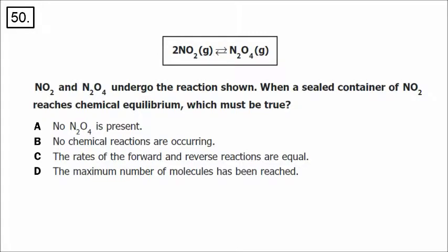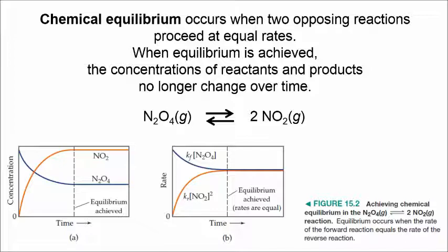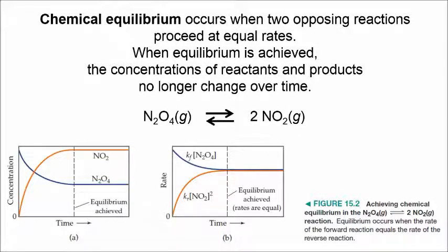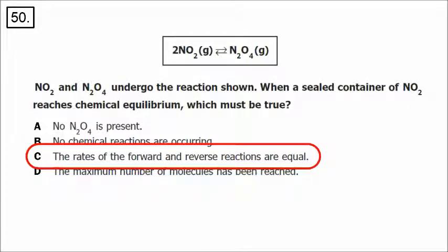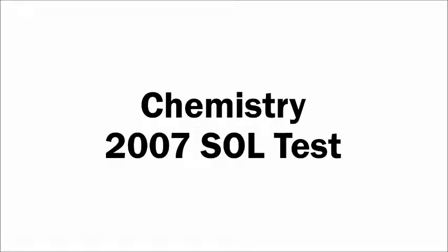Number 50 deals with equilibrium. Chemical equilibrium occurs when two opposing reactions proceed at equal rates. When equilibrium is achieved, the concentrations of reactants and products no longer change over time — you'll see double arrows in the chemical reaction. The diagram on the left shows concentrations changing, then staying constant past the dashed line. The diagram on the right shows reaction rates that eventually become equal. The correct answer is C: the rates of the forward and reverse reactions are equal. This is the end of the Chemistry 2007 SOL test.